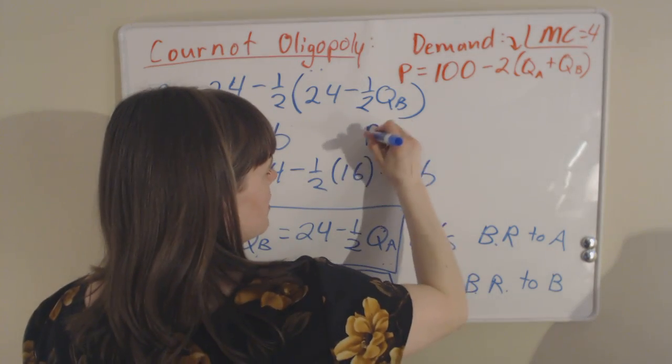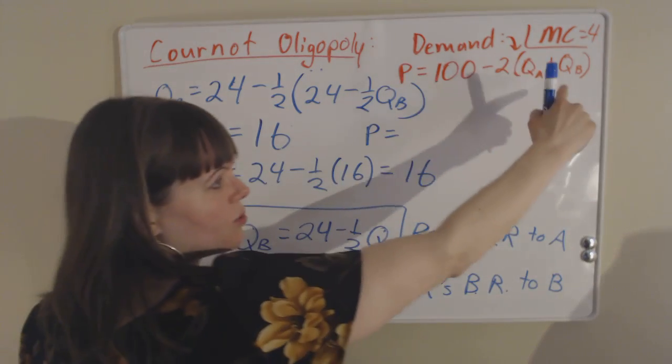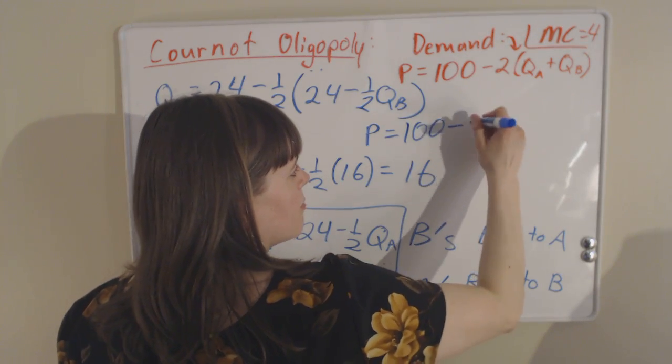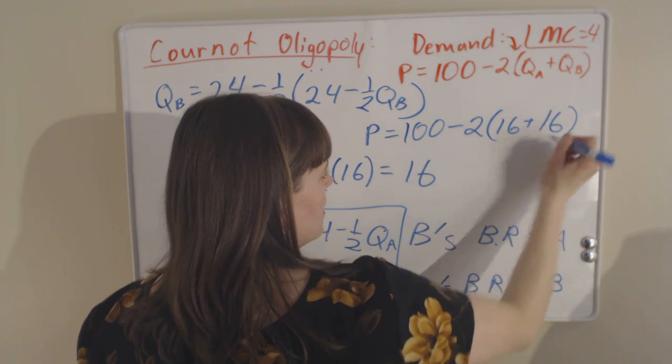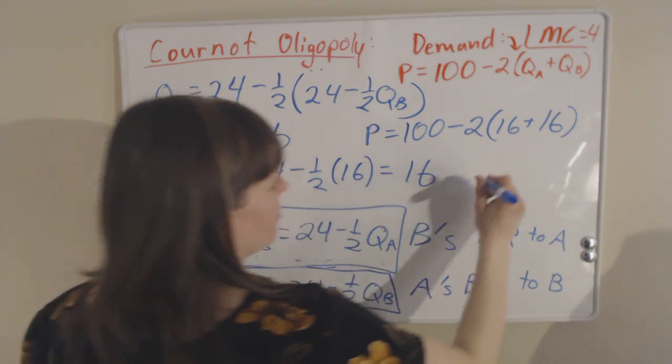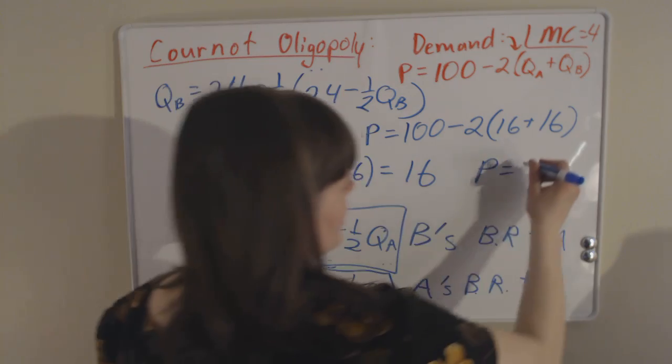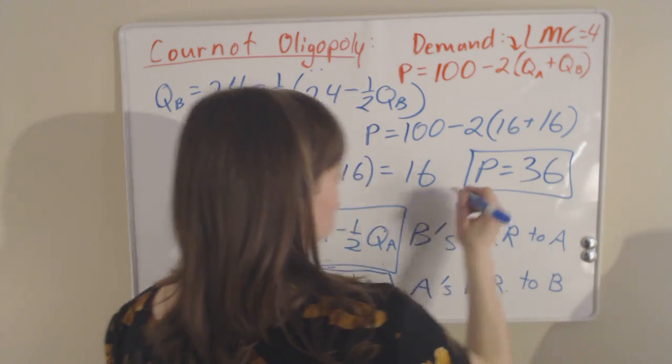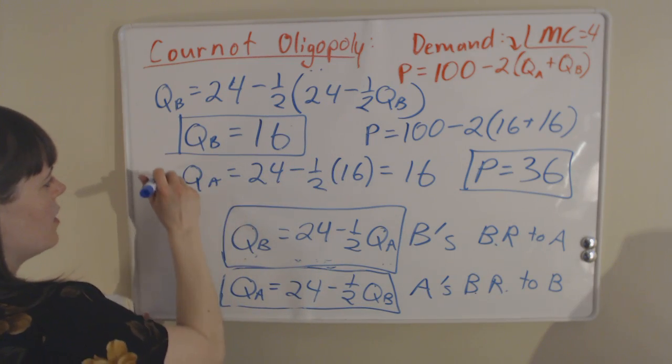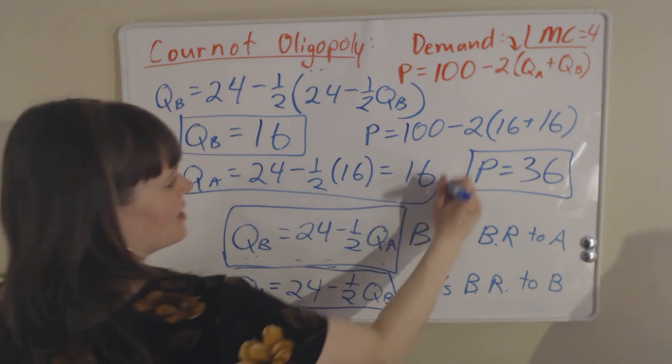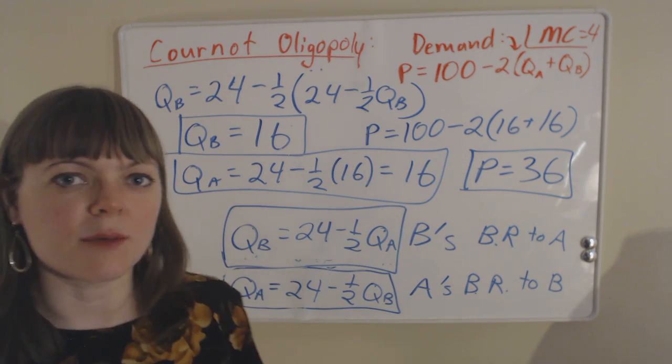The price is going to be—we just plug both of those quantities into our demand function. So we get price is 100 minus 2 times 16 plus 16, which will give us price equal to 36 in this industry. We've solved for the industry price and the quantity that each firm will produce. Firm A produces 16, and we've entirely solved our Cournot oligopoly problem.